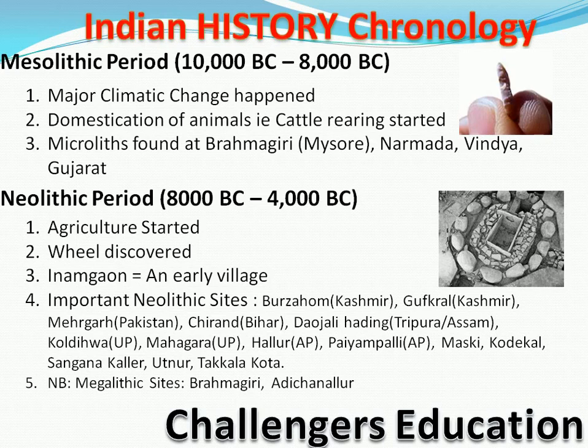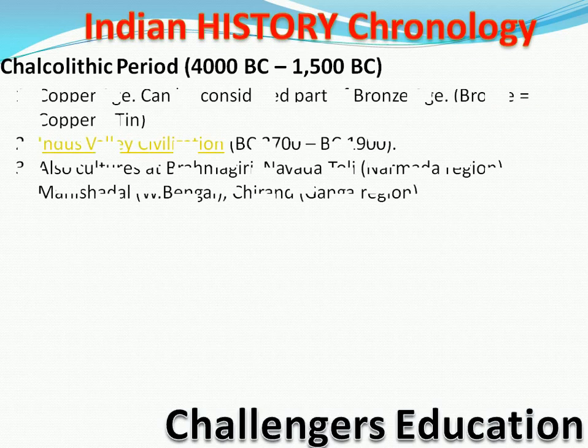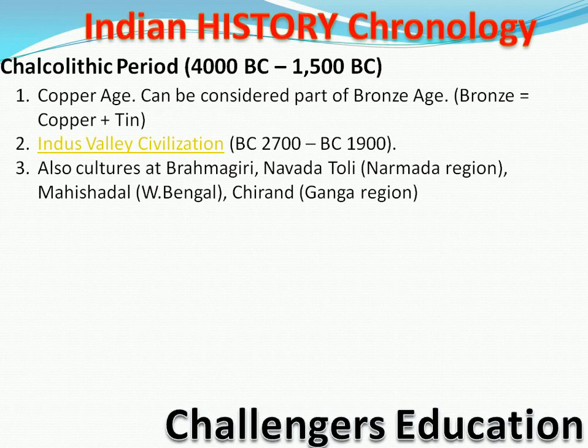Iske baad jo hamara aata hai that is Chalcolithic period — 4,000 BC to 1,500 BC. Ismein aayega Copper Age, jise hum Bronze Age bhi kehte hain kyunki bronze kya hota hai — copper aur tin ka mixture. Iske baad hum padhenge Indus Valley Civilization — 2,700 BC to 1,900 BC. Brahmagiri, Navda Toli, Mahishadal (West Bengal), aur Chirand ke cultures bhi padhenge.